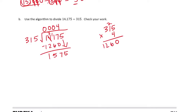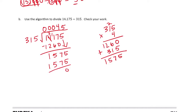So how many times can it go into 1,575? Probably 5 times. 5 times 315 is 1,575. Yes, it can go in 5 times. There's no remainder, so I get 45. And if we want to check our work, we can check it by multiplying. So we can do 315 times 45 and make sure we get 14,175.